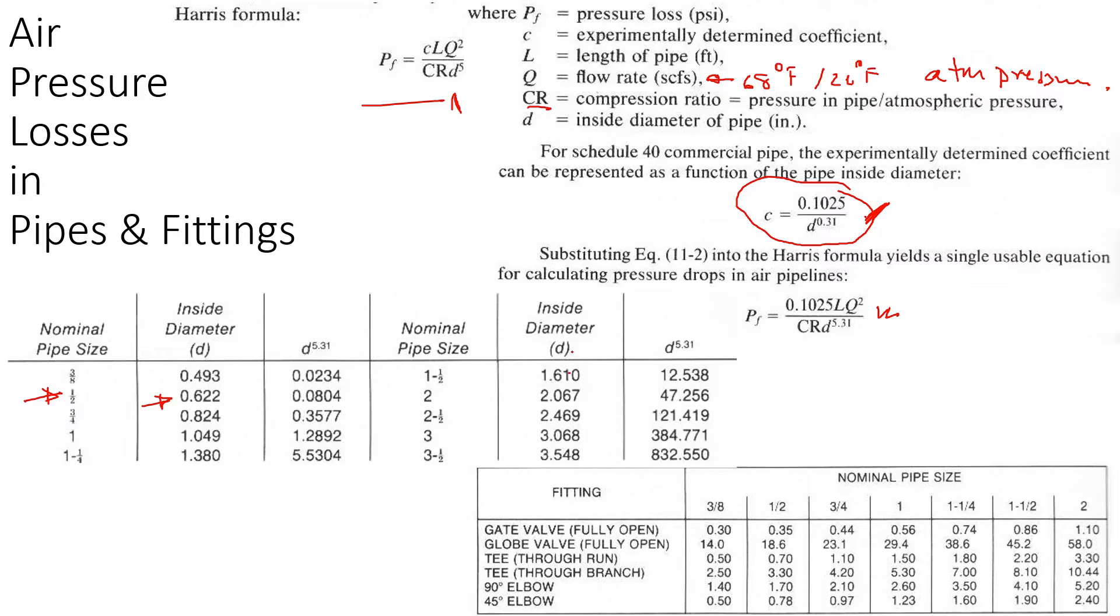To calculate length we have to also consider fittings like Ts, 90 degree elbows, 45s. In hydraulics we separately calculate the losses, but here you can simply use this available table for the equivalent length.